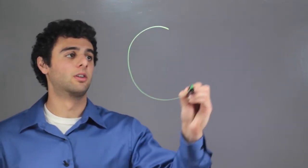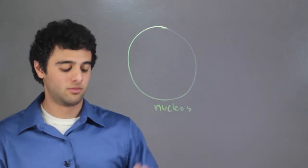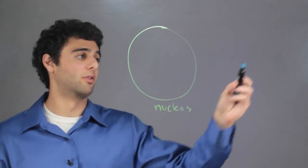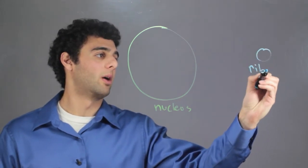So here we have the nucleus and in a different part of the cell over here we have the ribosome.